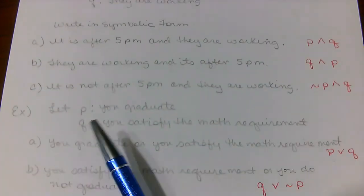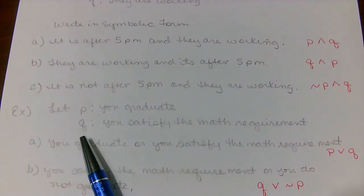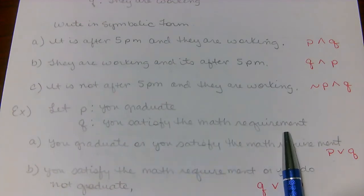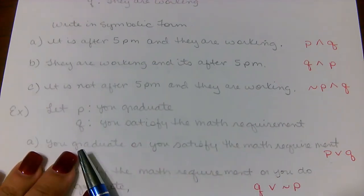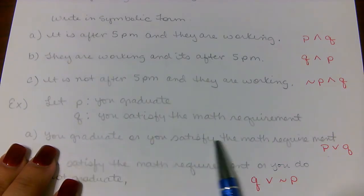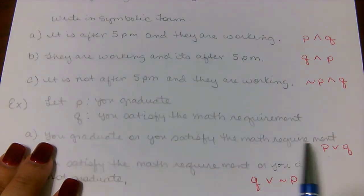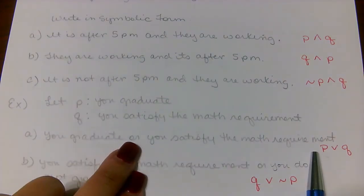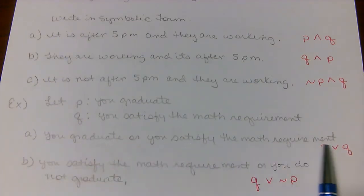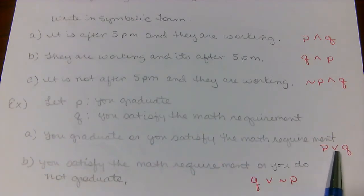Let's try a couple more. Let P be 'you graduate' and Q be 'you satisfy the math requirement.' Statement A says: you graduate or you satisfy the math requirement. You graduate is represented by P, and the 'or' symbol follows, then you satisfy the math requirement, which is Q. So we're saying P ∨ Q.